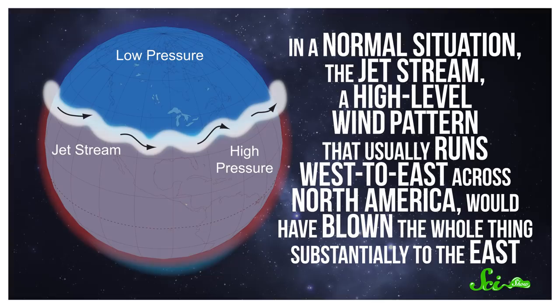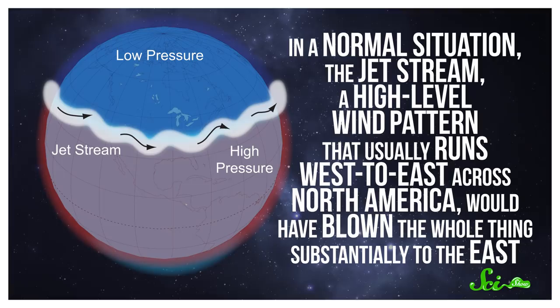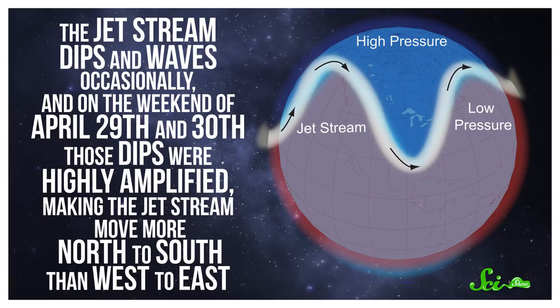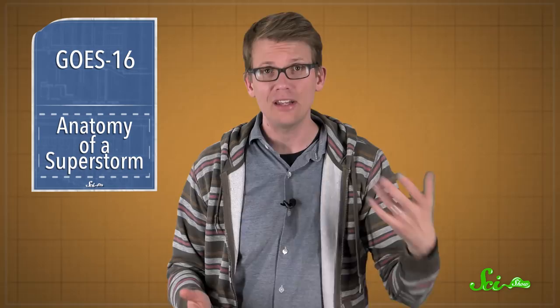In a normal situation, by this time, the jet stream — a high-level wind pattern that usually runs west to east across North America — would have blown the whole thing substantially to the east, possibly even out into the Atlantic. But the jet stream dips in waves occasionally, and on the weekend of April 29th and 30th, those dips were highly amplified, making the jet stream move more north to south rather than east to west. So instead of quickly moving east, the storm moved very slowly, and there were multiple days of thunderstorms across the same areas. That led to a devastating flood and loss of life. But with the new high-resolution data that scientific instruments like NOAA's GOES-16 are collecting and sending down to Earth in real time, we will only get better at identifying and reacting to these events.